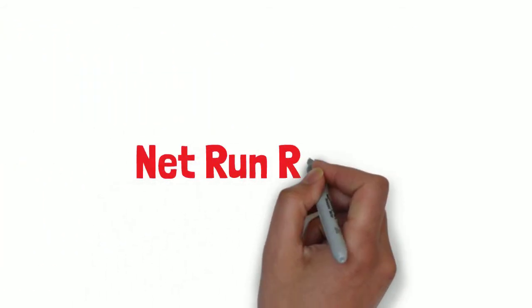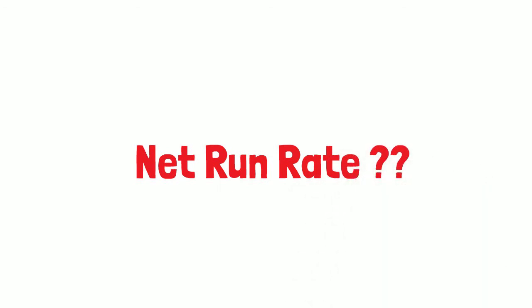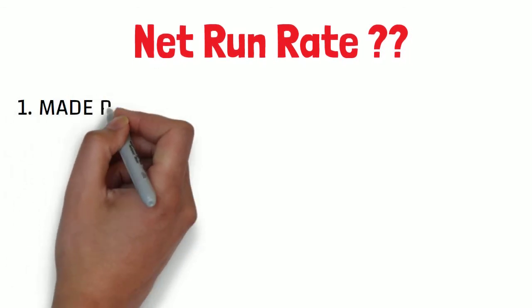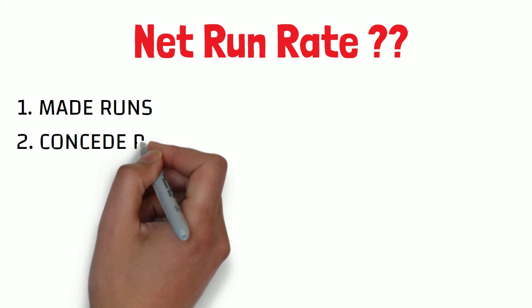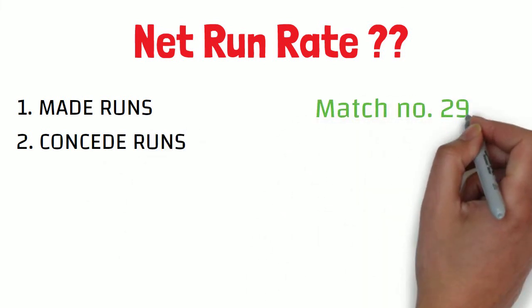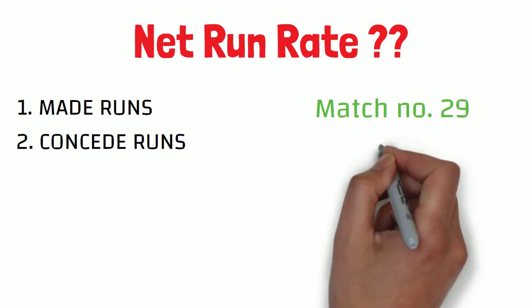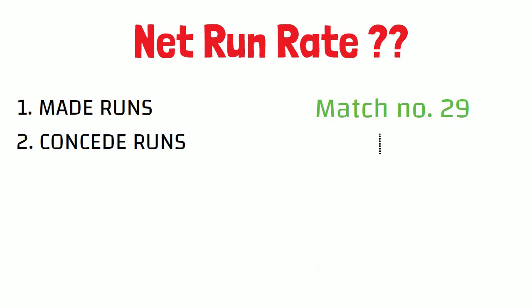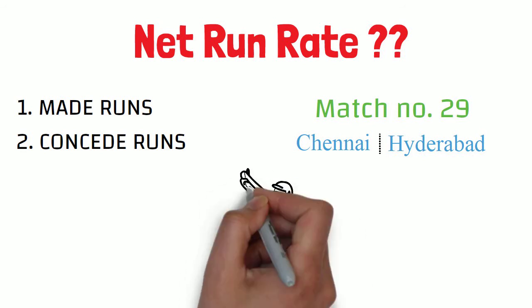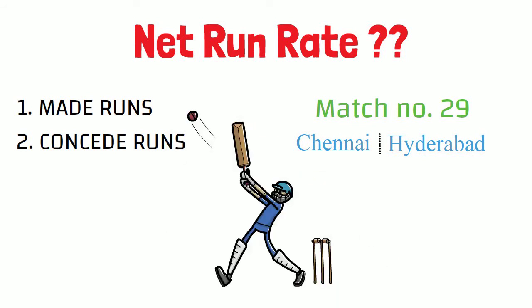Let's move to the calculation. How is net run rate calculated? The concept is simple. To calculate net run rate we need two things: first, how many runs the winning team scored, and second, how many runs that winning team conceded. Let's understand it with an example. In IPL match number 29 between Chennai and Hyderabad, I will show you how much net run rate Chennai gained as they won that particular match.